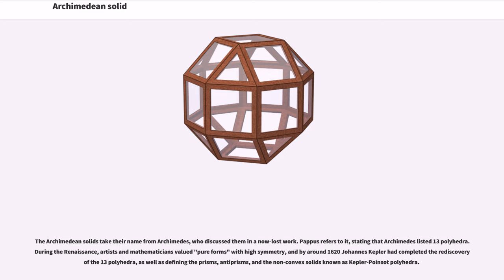During the Renaissance, artists and mathematicians valued pure forms with high symmetry, and by around 1620 Johannes Kepler had completed the rediscovery of the thirteen polyhedra, as well as defining the prisms, antiprisms, and the non-convex solids known as Kepler poinsot polyhedra.